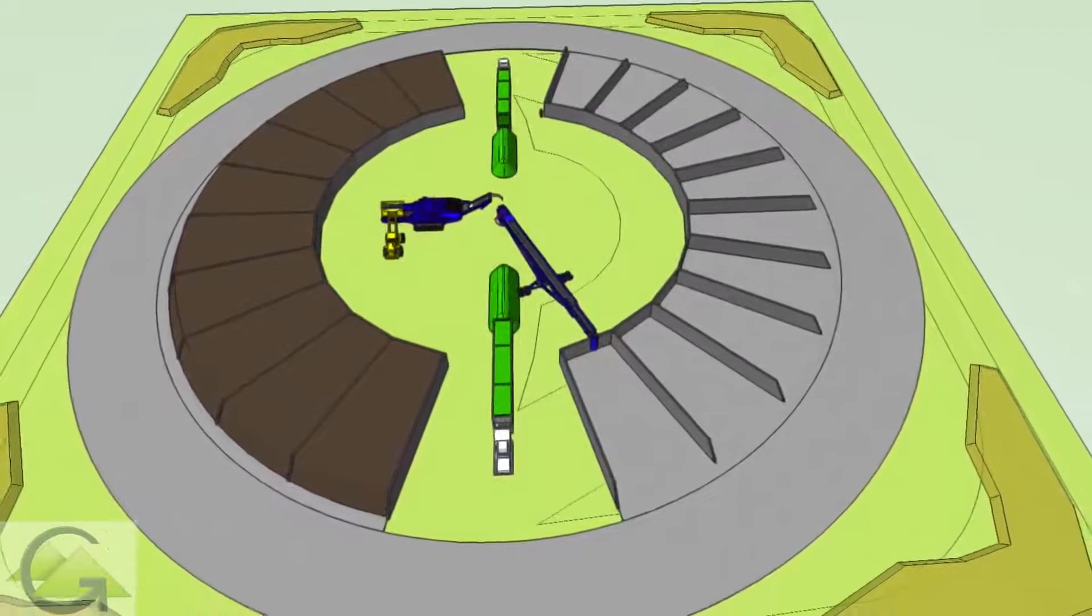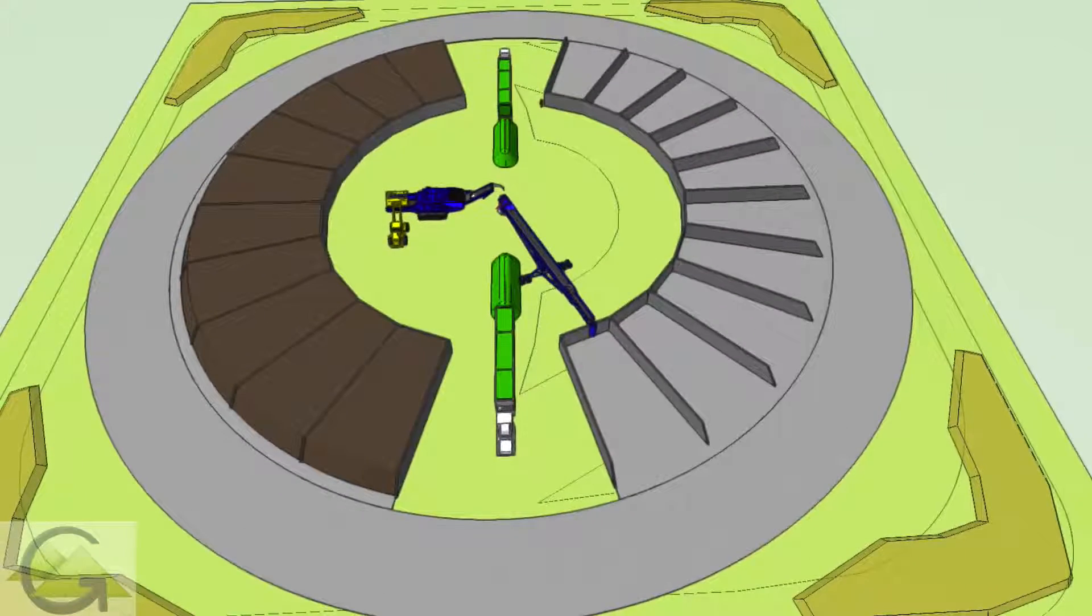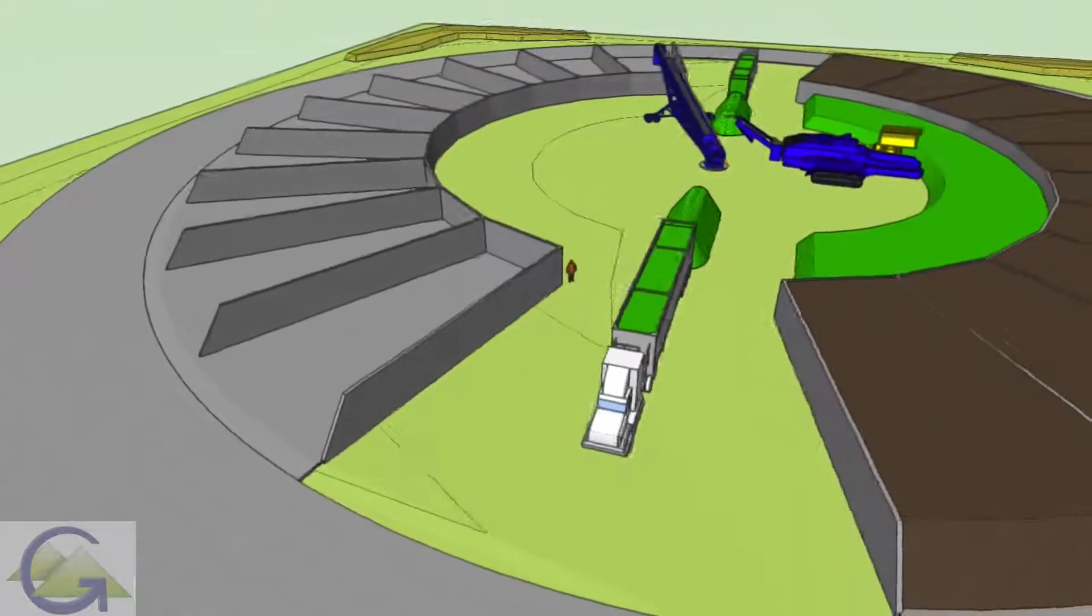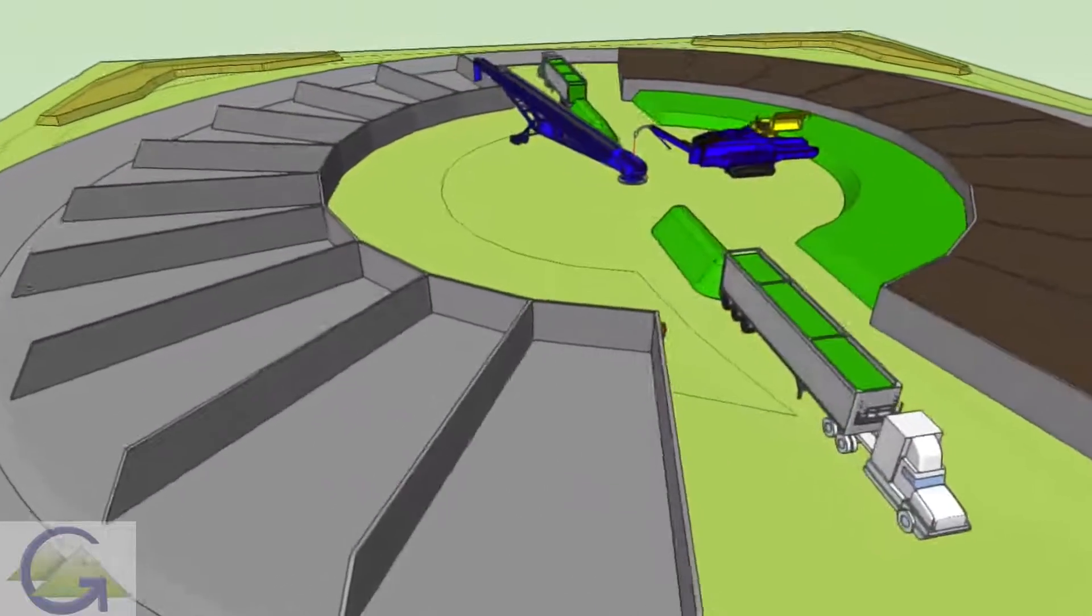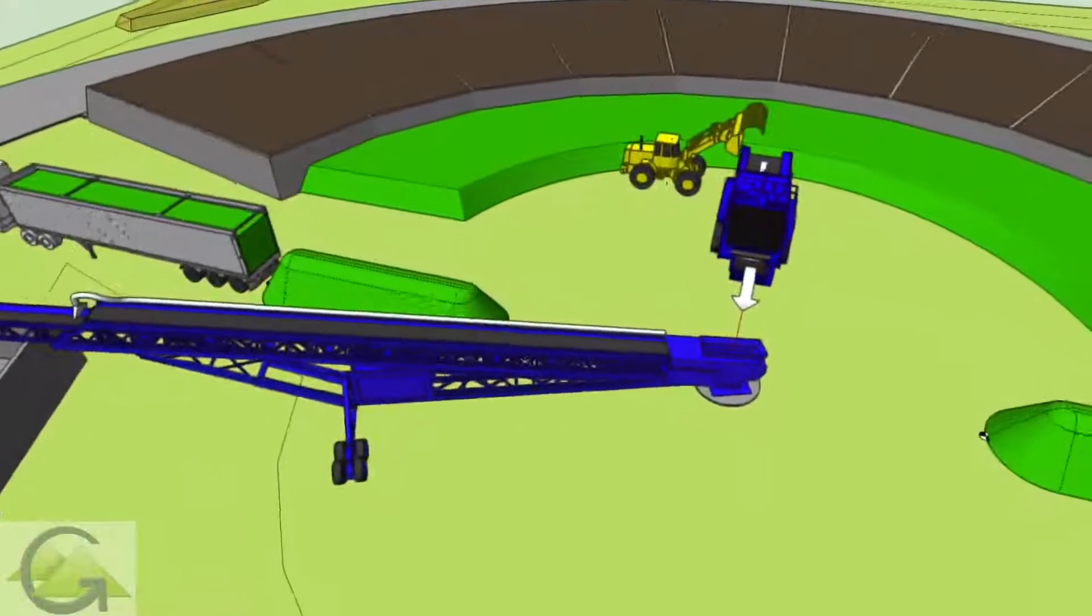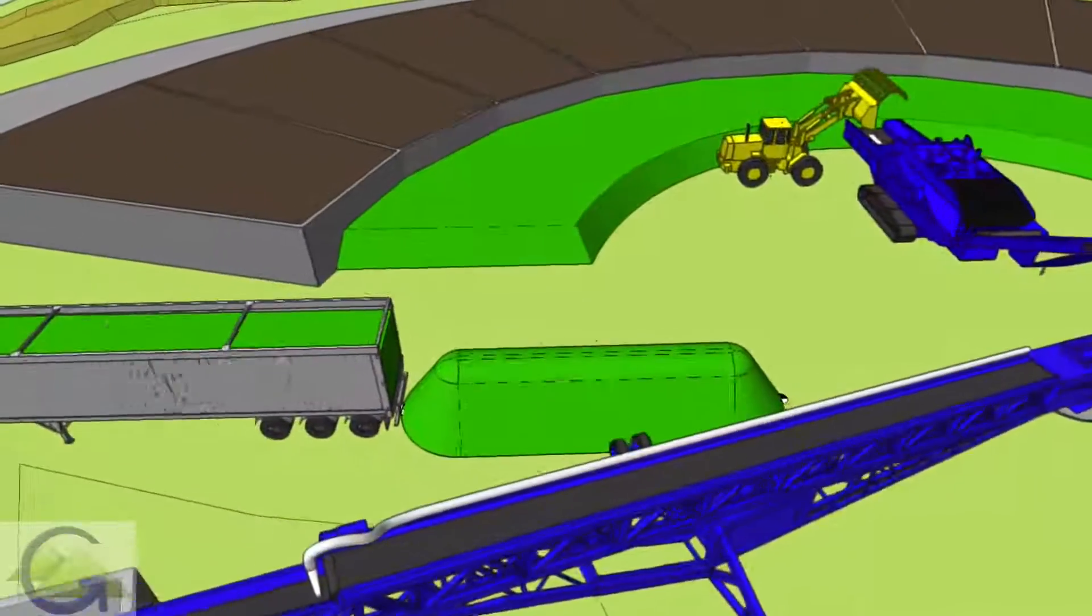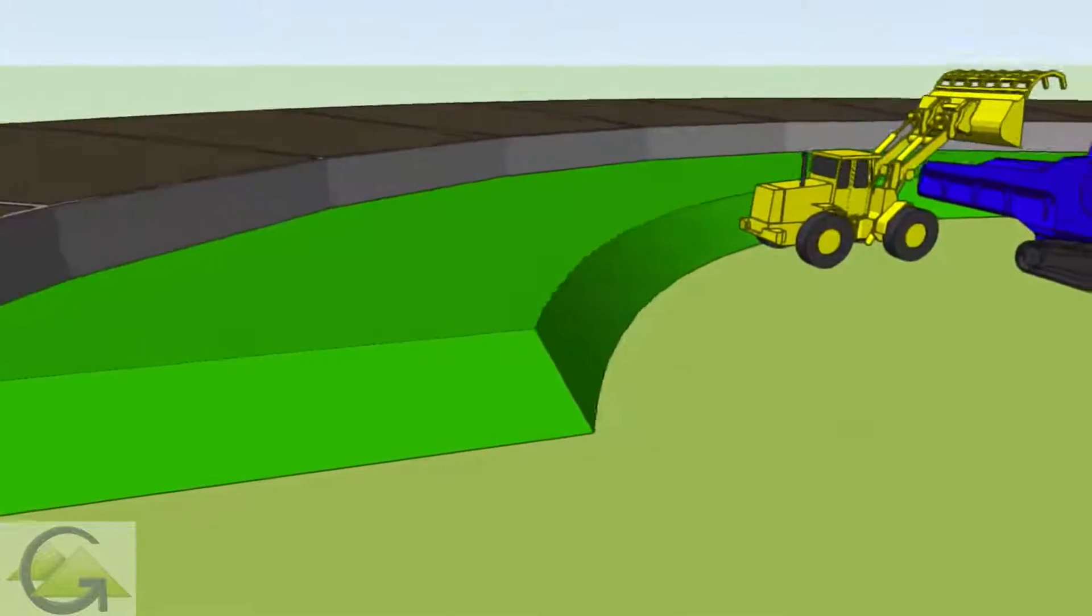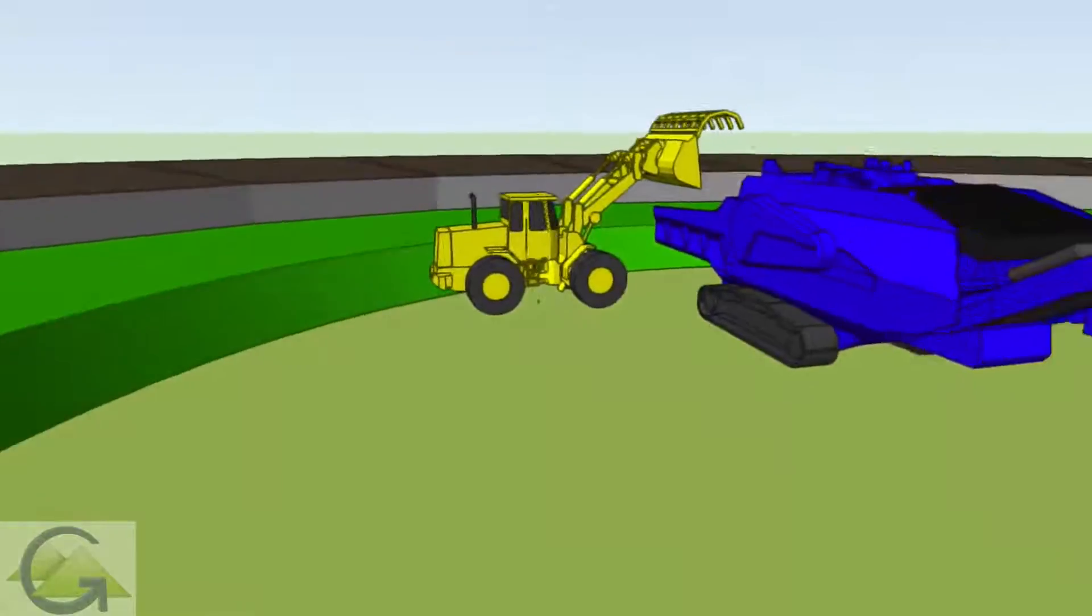It requires only one loader operator to manage the whole process. Here is how the curved ASP system receives and processes incoming materials. Larger trucks enter either alley and drop off within the receiving area. The loader can push the feedstocks against the back wall of the ASP bunker for storage before grinding.